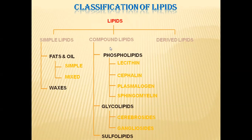So in all these three categories — phospholipids, glycolipids, and sulfolipids — lipids are bound to some other different group. Hence they are called compound lipids. In phospholipids, they are bound to phosphate groups. In glycolipids, they are bound to glyco-molecules or carbohydrates. And in sulfolipids, they are bound to sulfur.